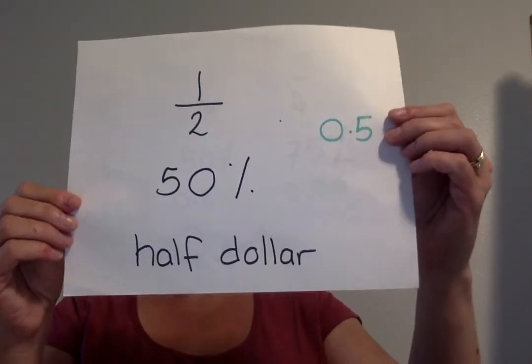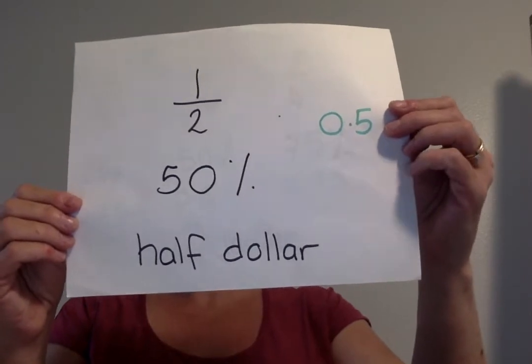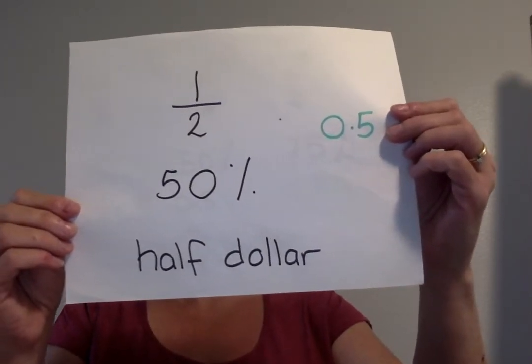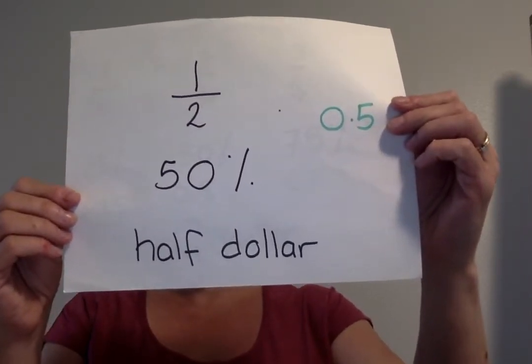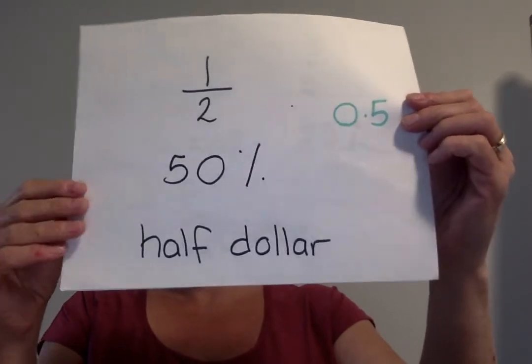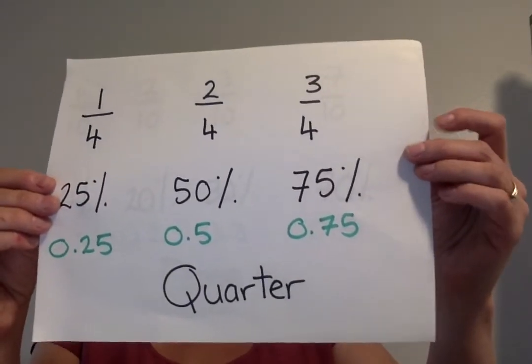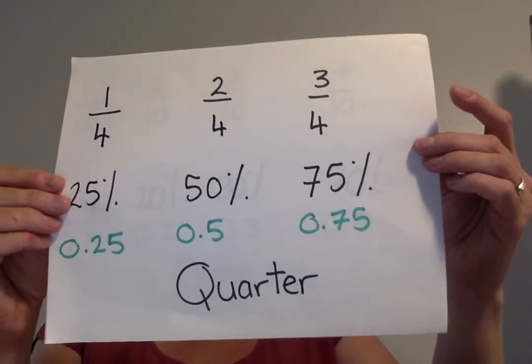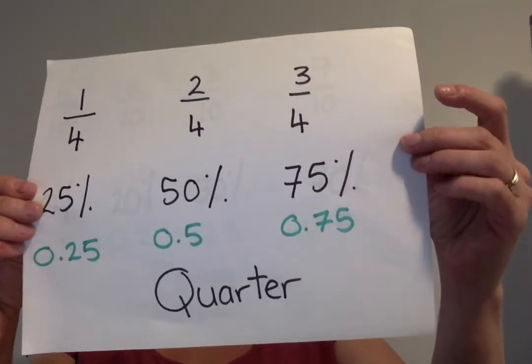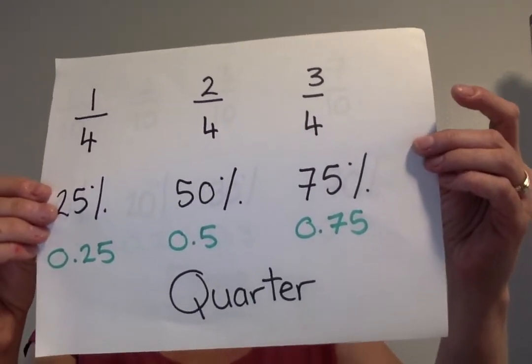You have a half dollar. A half dollar is 0.5 as a decimal and it's 50 percent as a percentage. We also have a quarter in America. One quarter is 0.25 or 25 percent. Two quarters, which is the same as a half, 0.5, 50 percent.